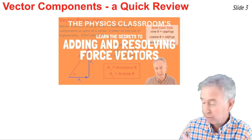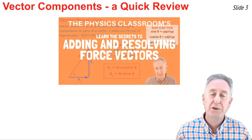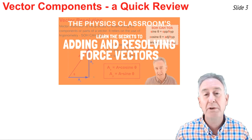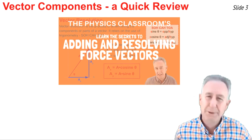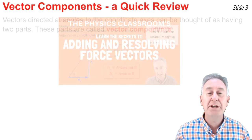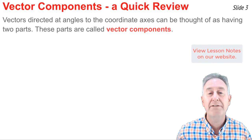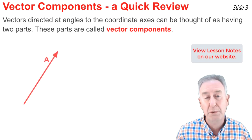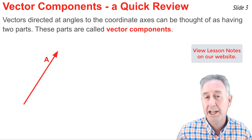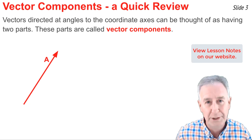In a previous video, this one, I discussed vector resolution and vector components. If you need to review the video, there's a link to it in the description section of this one. One thing we discussed in that video was that any vector at some angle to the traditional horizontal and vertical axes has what we call two parts or components.